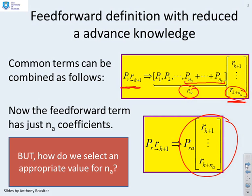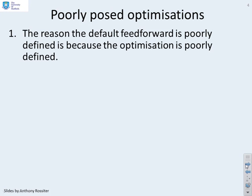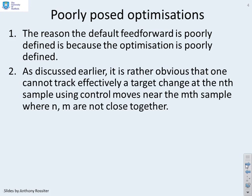The question we want to ask is how do we select an appropriate value for NA? The reason that the default feedforward with all terms is poorly defined is because the GPC or finite horizon predictive control optimization is poorly defined. It's rather obvious that you cannot track a target change at the nth sample when all your control moves are around the nth sample if N and M are not close together.